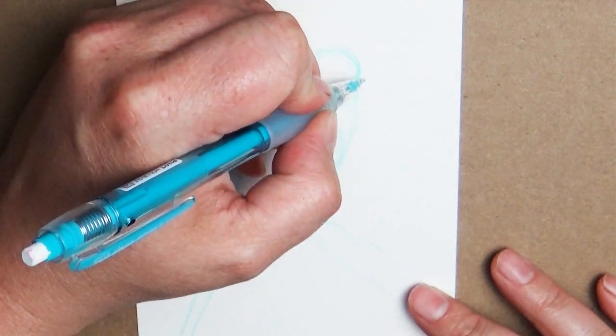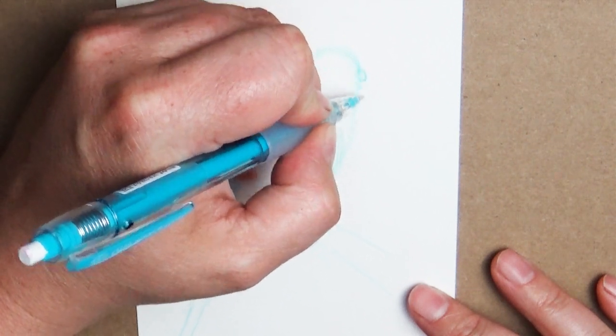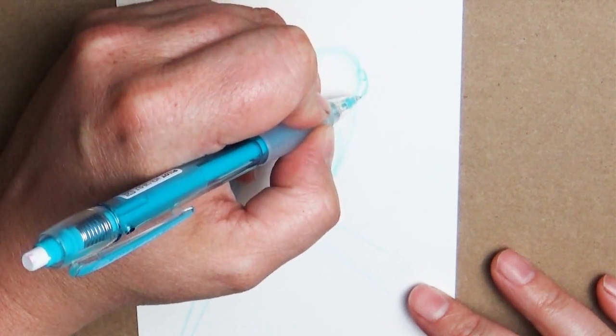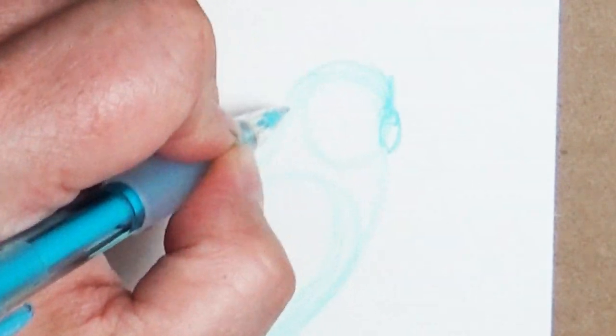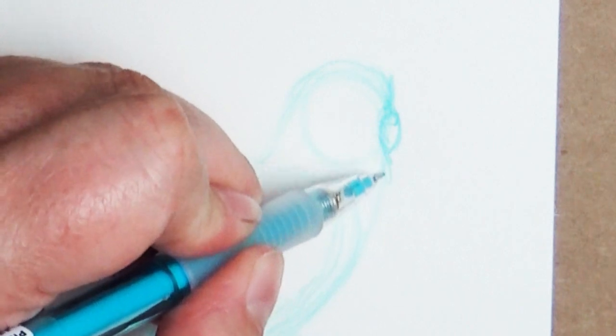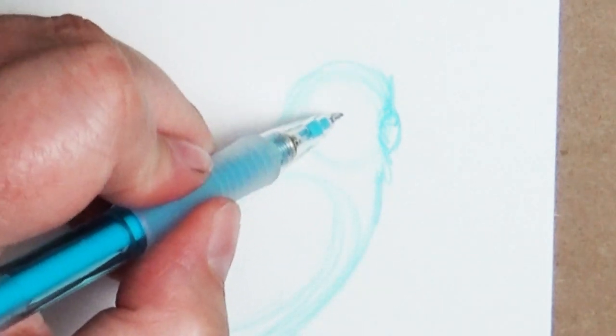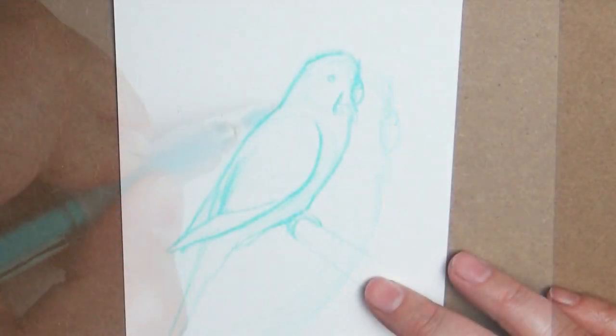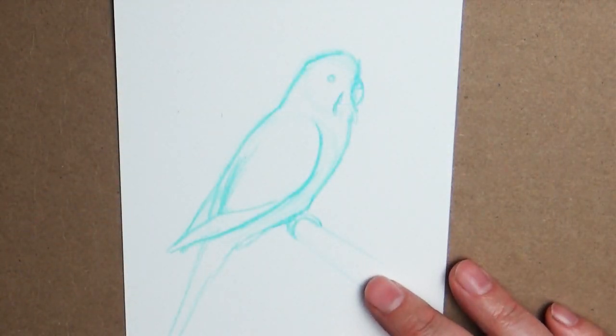Now parakeets have a very tiny little flat face, so you're not going to have a really long beak protruding out. Just a very kind of like almost like a little half circle on the side of the face there. Then you can begin adding a little bit of the detail like feather ruffling and placing in the eye. There we go, we have our basic sketch out for a parakeet.